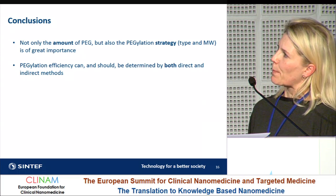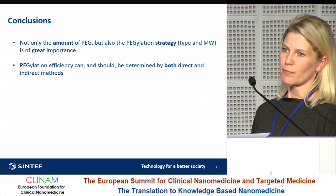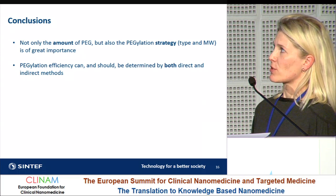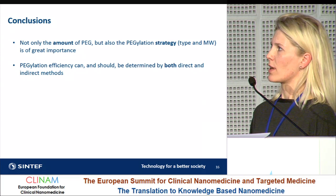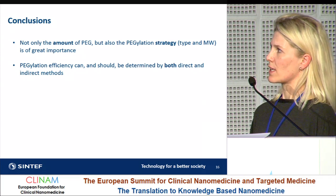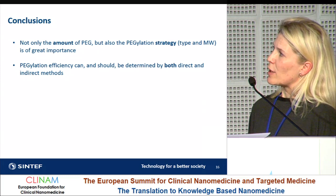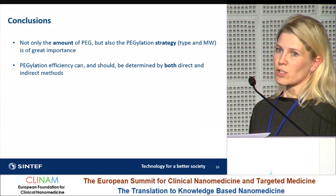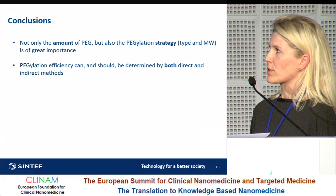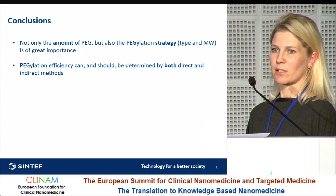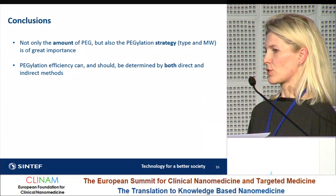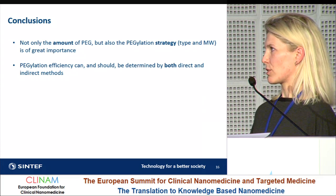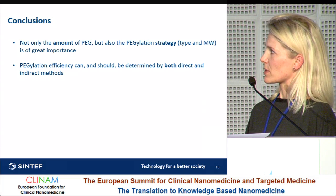To conclude, not only the amount of PEG but also the pegylation strategy — meaning both the type and the molecular weight — is of great importance and has to be considered. Pegylation efficiency can and should be determined by both direct and indirect methods, because one method is not enough to fully characterize your system.